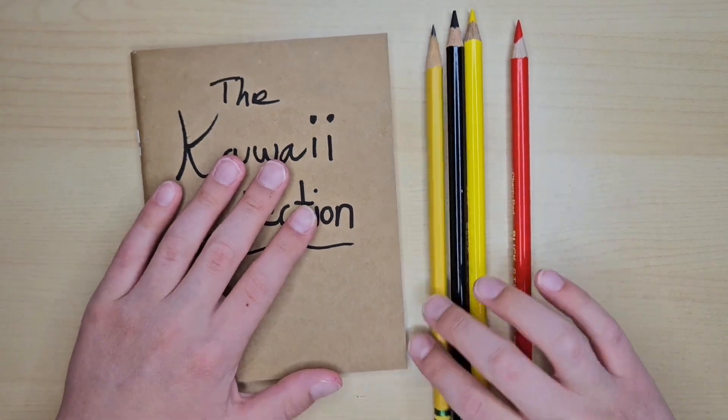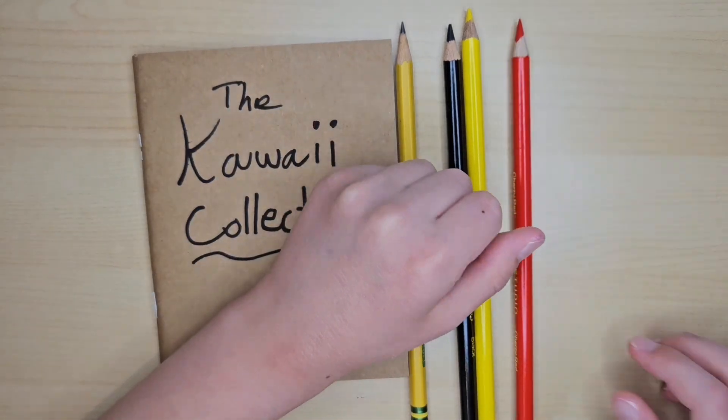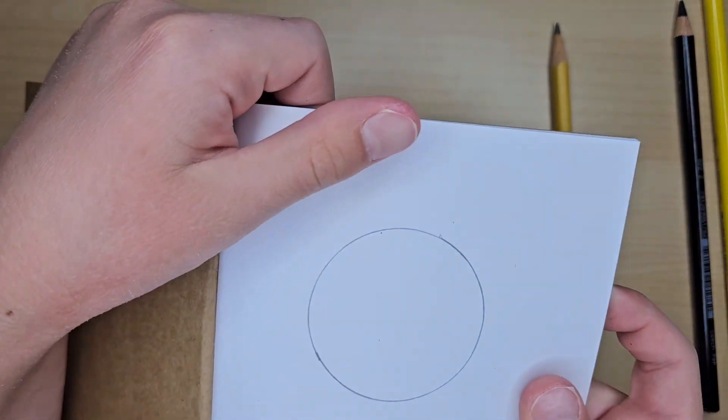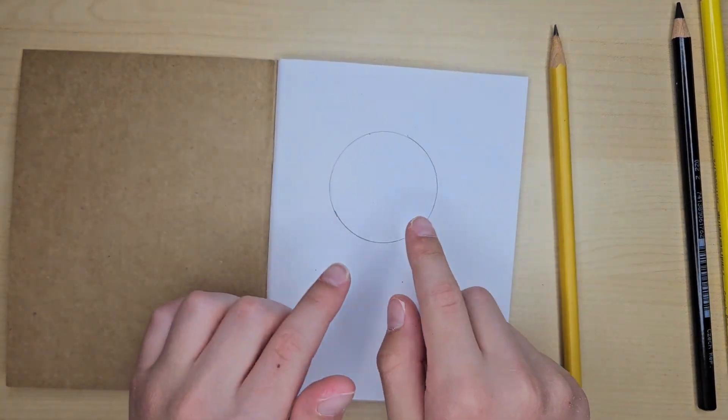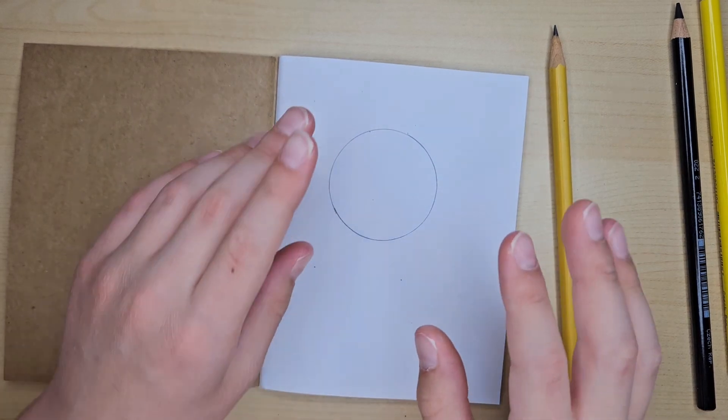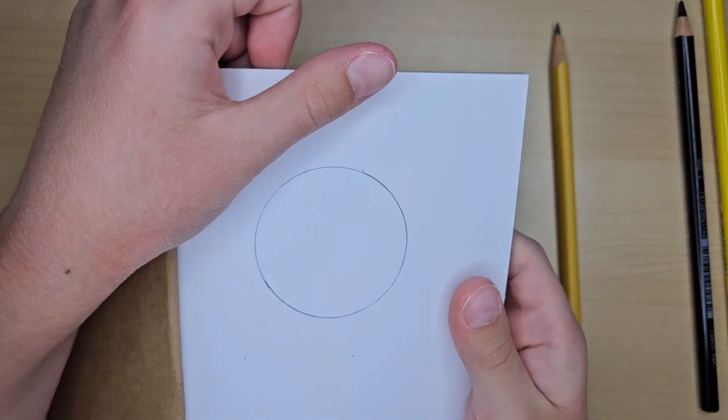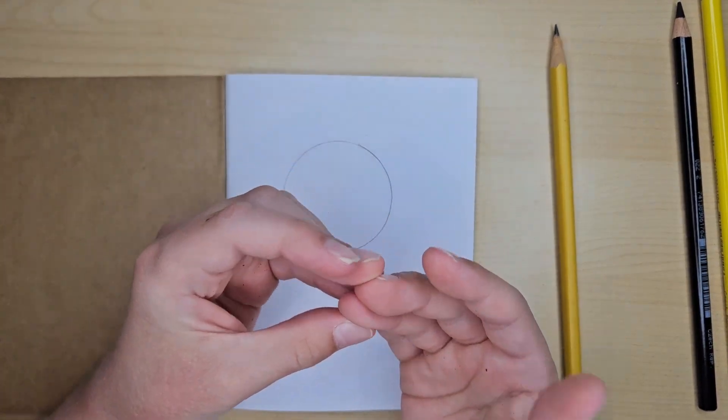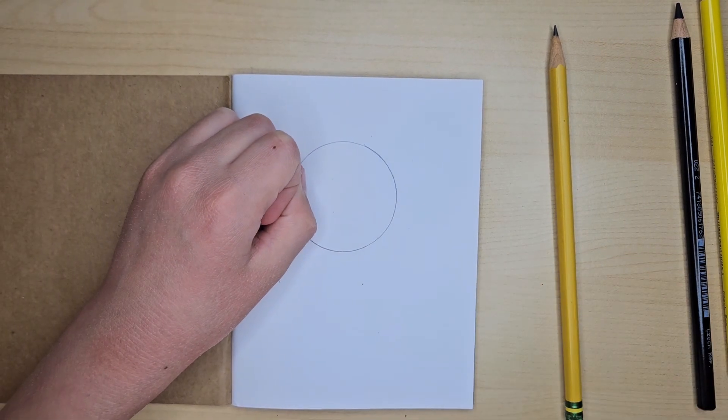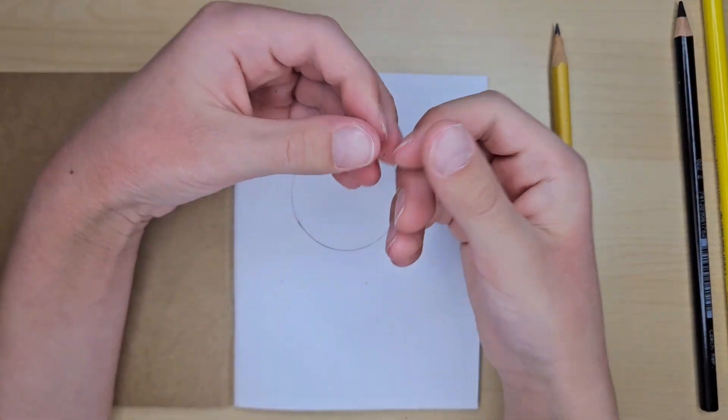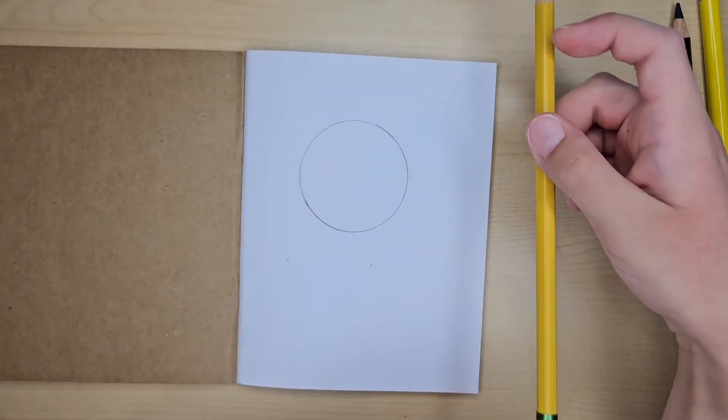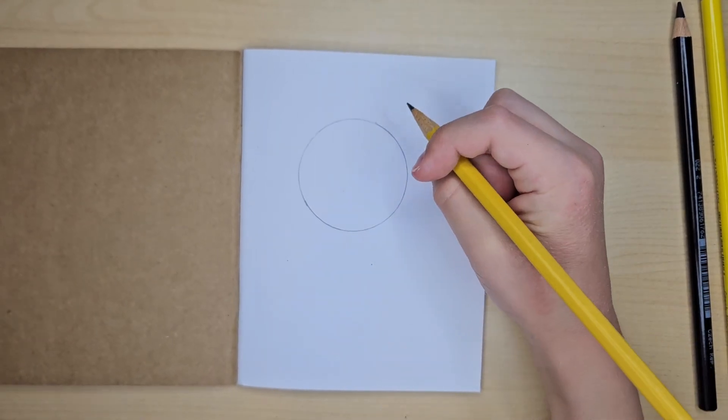Let's get right into the video. First step, you want to draw a circle on the page, slightly up from the middle so you could draw the body of Mickey. To do this circle we can either use a circle tracer or an item at home, maybe a sharpener or something else that's round, and just trace it around with our handy dandy pencil.